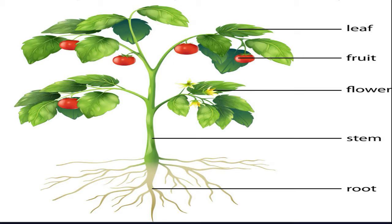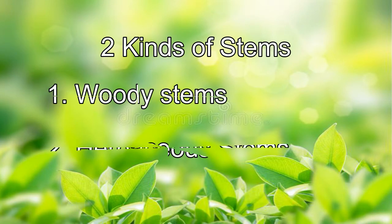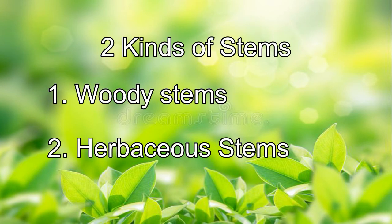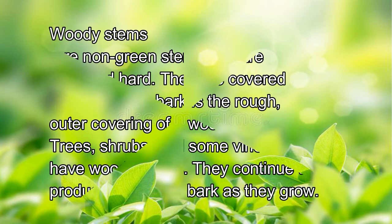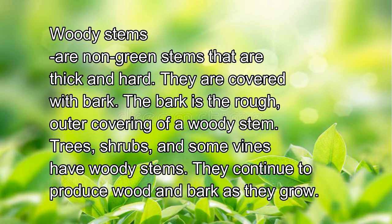The stem supports the whole plant and must be tough to withstand the force of strong winds. There are two kinds of stems: woody stems and herbaceous stems. Woody stems are non-green stems that are thick and hard. They are covered with bark, which is the rough outer covering of a woody stem. Trees, shrubs, and some vines have woody stems and continue to produce bark as they grow.